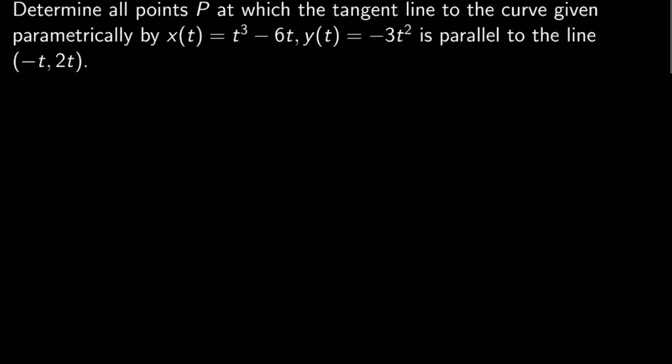I'm supposed to figure out all points P at which the tangent line to this curve is parallel to this line, and the line is even given parametrically. Now, I could do some monkey business and rewrite this as an equation and figure out the slope, or I could just use the formula for the derivative of a parametrized curve for both of these things and move on with my life, which is what I'm going to do.